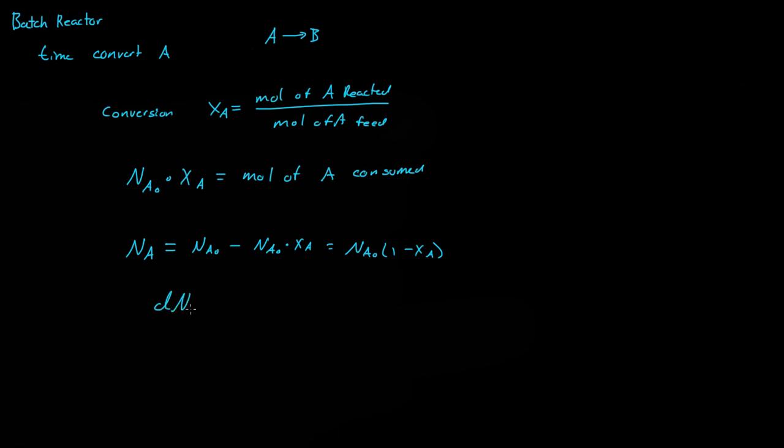Now if we wanted to know the change in the moles of A with respect to time, that's equal to the reaction rate of A times the volume. So remember, this is the change in the moles of A with respect to time and volume, the reaction rate is. So if we multiply that by the volume, we get dNA over dt.